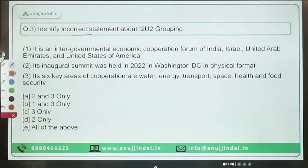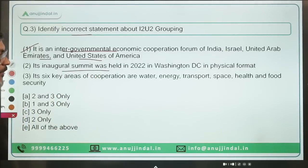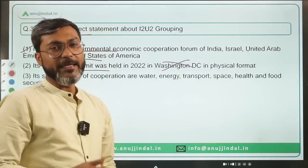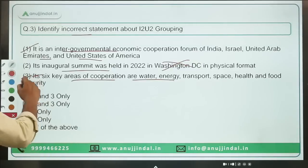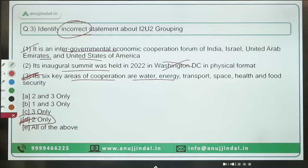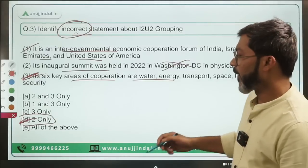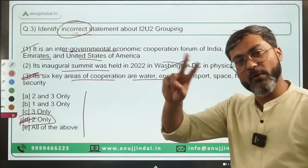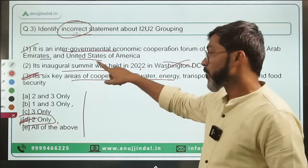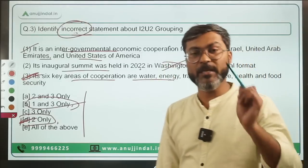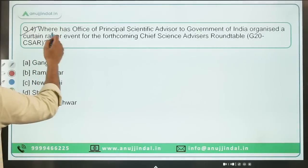Identifying the incorrect statement about I2U2: the inaugural summit was held in 2022 in Washington DC in physical format — this is incorrect, as it took place in virtual format. The six key areas of cooperation — water, energy, transport, space, health, and food security — are correct. So the incorrect statement is number two only, making option D the correct answer. Remember to carefully note whether you need to identify the correct or incorrect statement, as the options are designed to create confusion.